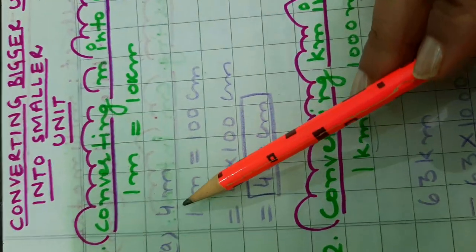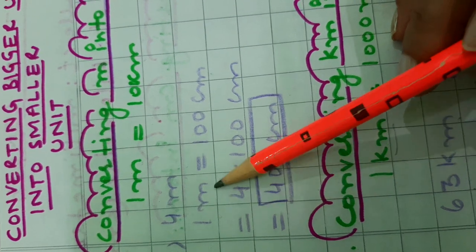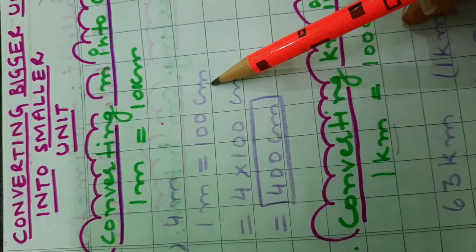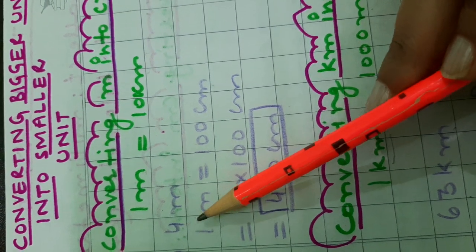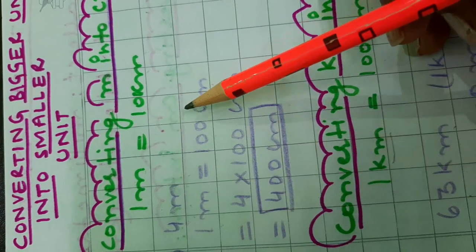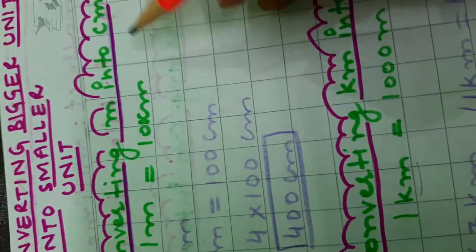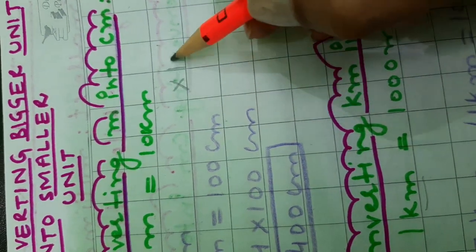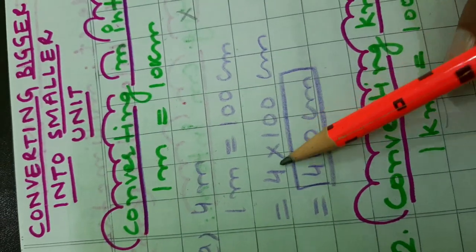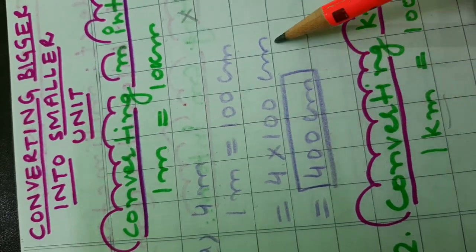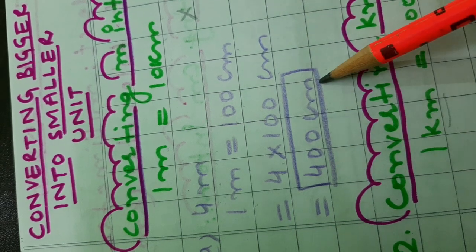Let us take one example: 4 meters. Now, 1 meter is equal to 100 centimeters. So, we have to multiply by 100 to convert it into centimeters. That means for converting meter into centimeter, we multiply that number by 100. So, we will multiply 4 by 100, which equals 400 centimeters.